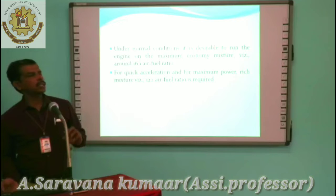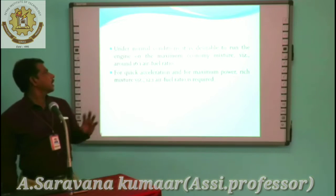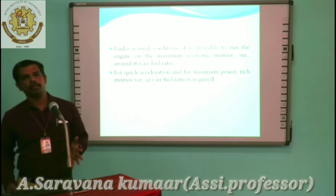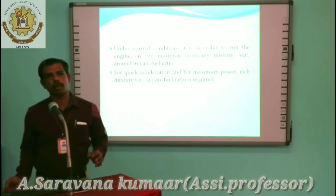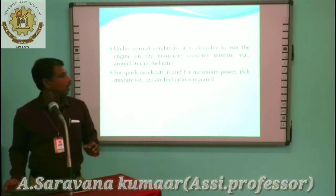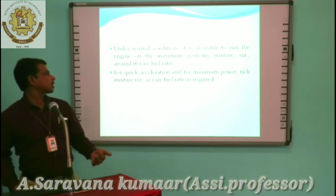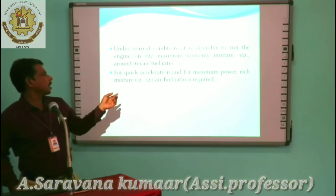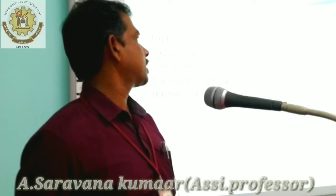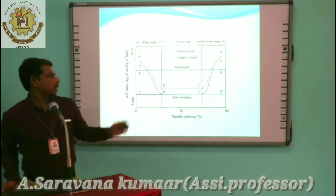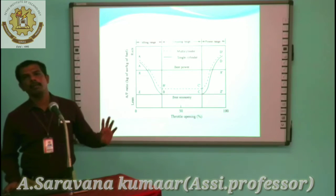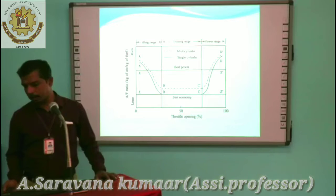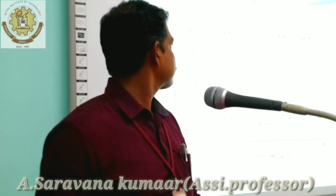Under normal conditions, the engine is able to run on the maximum economy mixture, around 14 to 15 to 1. For quick acceleration and maximum power, a rich mixture of 12 to 1 air-fuel ratio is required. The throttle opening, which we will see in the carburetor, controls this.